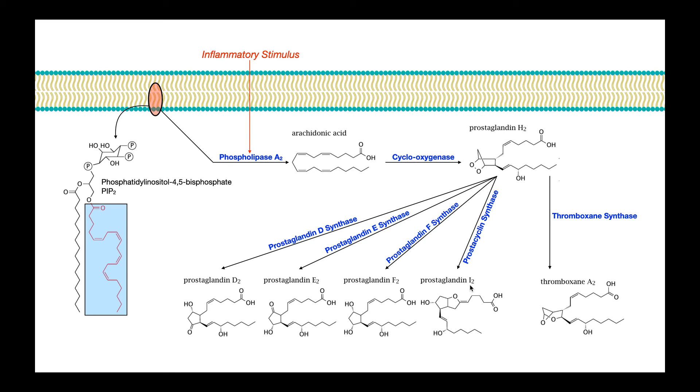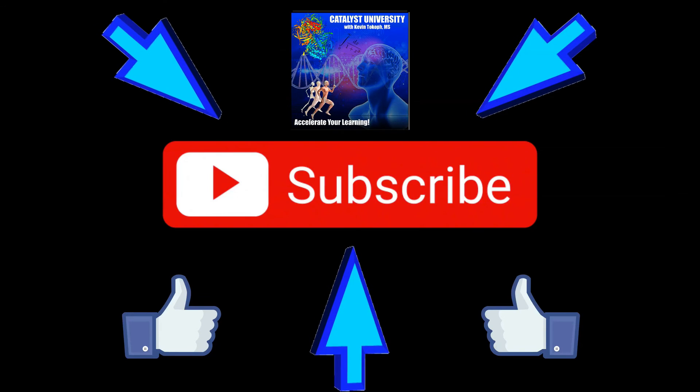So hopefully this video gave you a good understanding of the eicosanoid pathway, at least for the prostaglandins and thromboxane. In the next video, we're going to be looking at the leukotriene synthesis pathway and we'll see that it's a different set of enzymes needed. Please make sure to like this video and subscribe to my channel for future videos and notifications. Thank you.